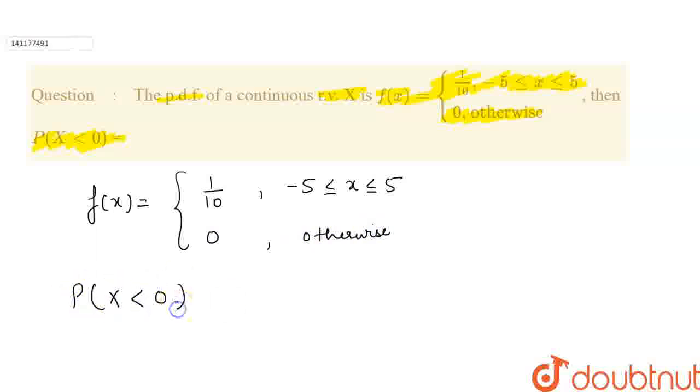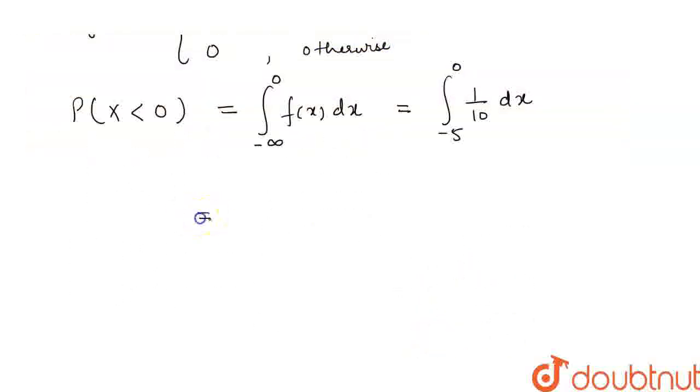So, probability of x is less than 0 equals the integral from minus infinity to 0 of f(x) dx, which equals the integral from minus 5 to 0 of 1 by 10 dx, equals 1 by 2.